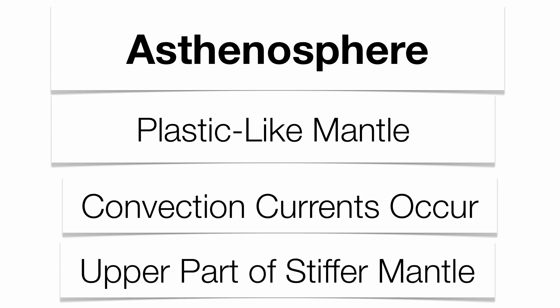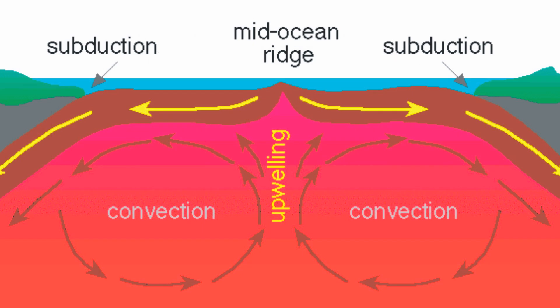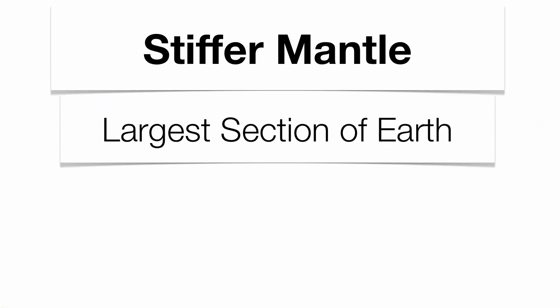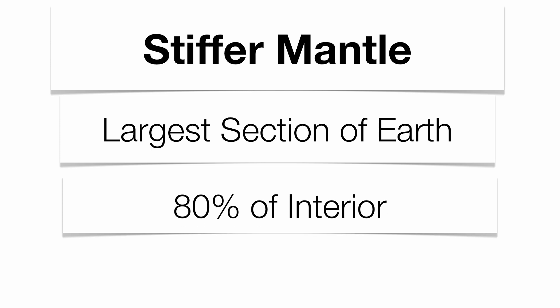The asthenosphere is the upper part of what we call the stiffer mantle. The diagram here shows the convection going on — we'll explain that in more detail later. The stiffer mantle is important because it's our largest section of the Earth, taking up about 80% of the Earth's volume on the interior. So it's a very, very big section.